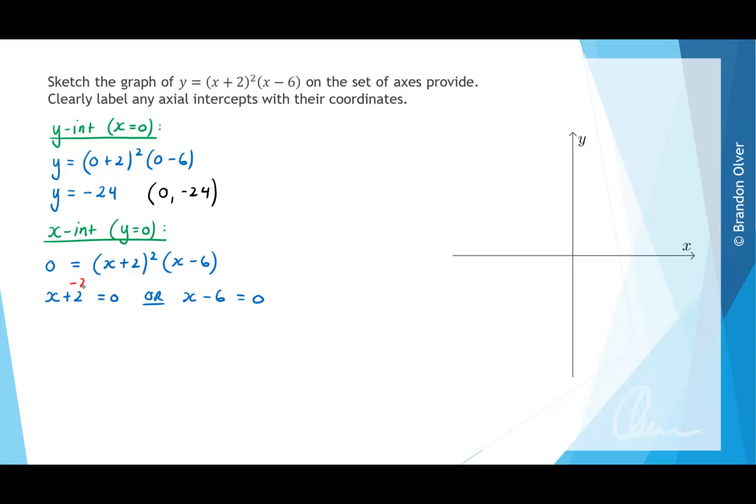For the first equation we can subtract 2 from both sides, and this gives x = -2. For our second possibility we can add 6 to both sides, and that gives x = 6. So the x-intercepts are at (-2, 0) and (6, 0).